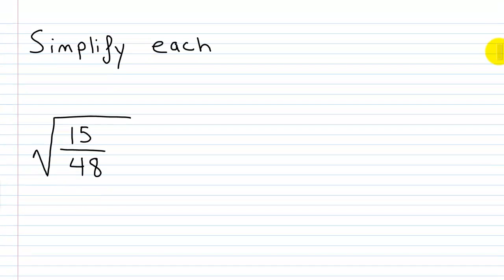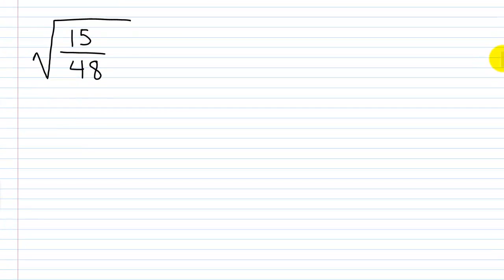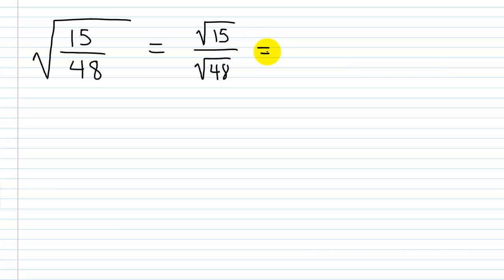Let's look at some sample problems. We want to simplify the square root of 15 over 48. I'll break this up into the square root of 15 over the square root of 48. On the top I can't really do anything, because 15 is just 5 times 3. For the square root of 48, 48 is 16 times 3, and 16 is a perfect square — it's 4 times 4.